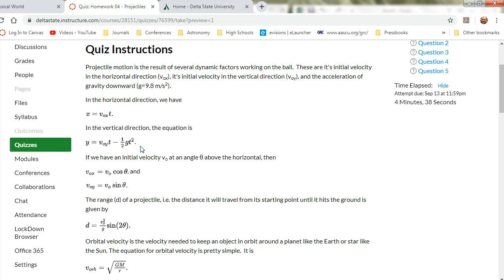So in the Y direction, which is vertical, straight up and down, the distance, your height, is V naught Y T minus one half G T squared, where G is the acceleration of gravity, in this case 9.8 meters per second squared.